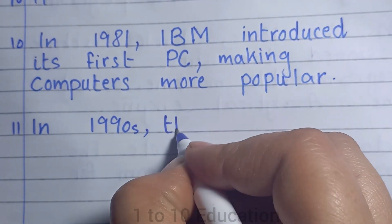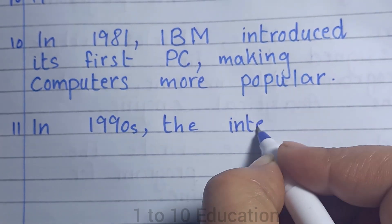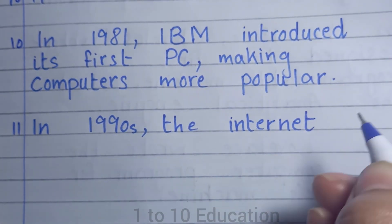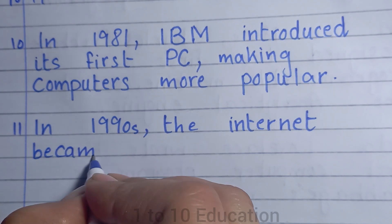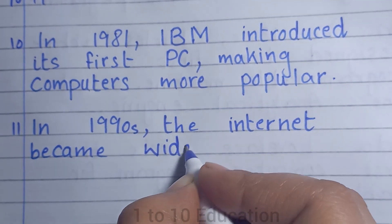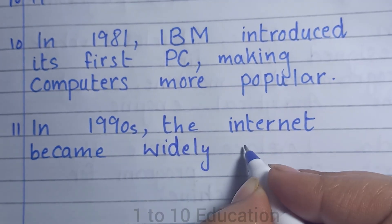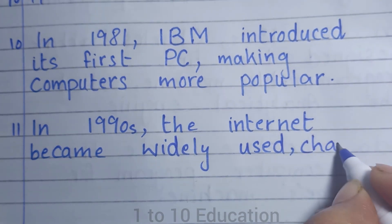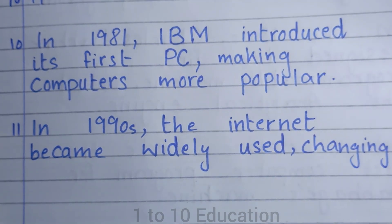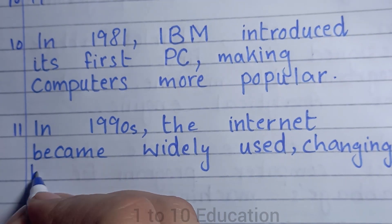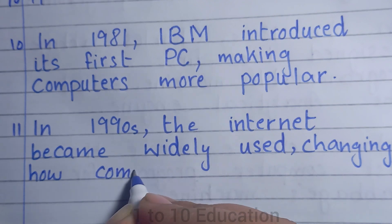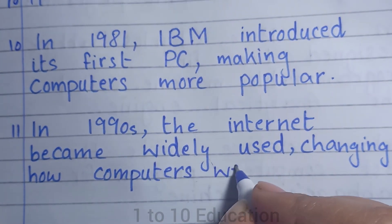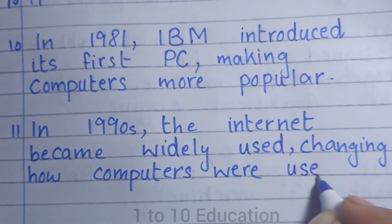Number 11: In the 1990s, the internet became widely used, changing how computers were used.